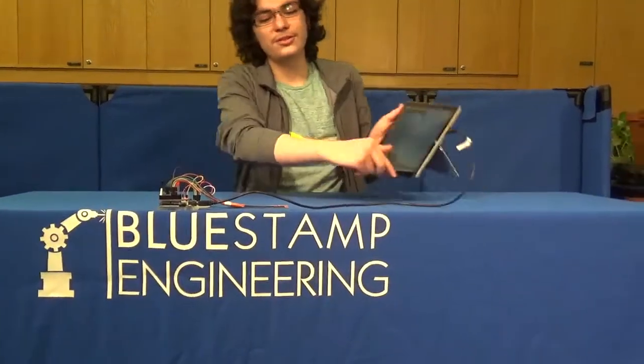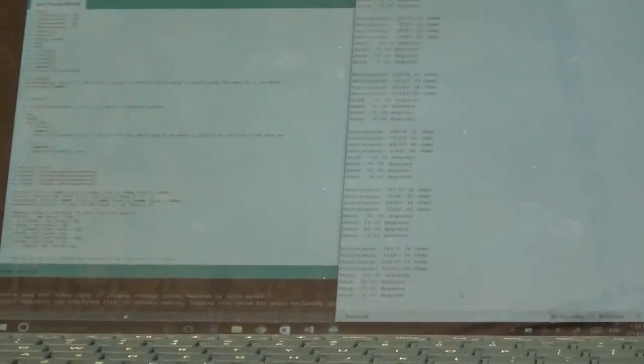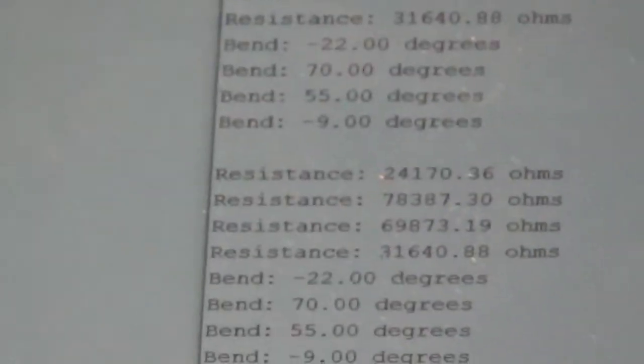I'm going to show you the code that I have right here, which I had to adjust so that I can see all the values for every single flex sensor, because at the beginning, you can only see the value of just one.